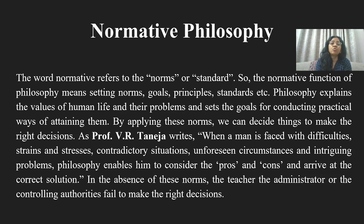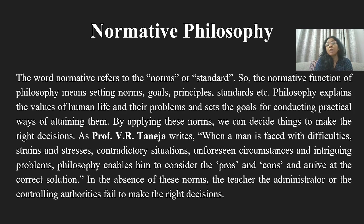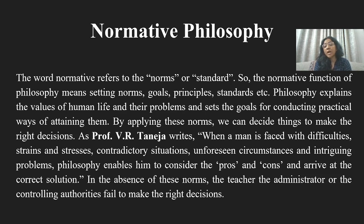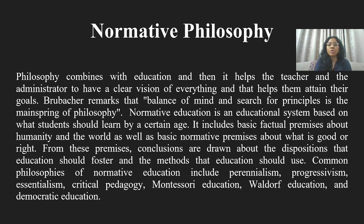By applying these norms we can make the right decisions, and by following and applying these norms, a person can reach his goals while making correct decisions. When a person faces difficulties, strain, stress, contradictory situations, and unforeseen circumstances, normative philosophy tells us the pros and cons — what will happen if we do this, what will happen if we do that — and helps us arrive at the correct solution. In the absence of these norms, it would be very difficult and one would fail to make the right decision.